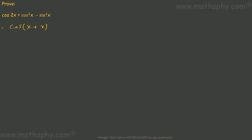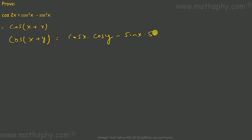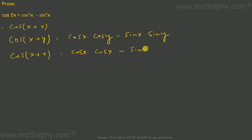We know that cos(x + y) is equal to cos(x)·cos(y) minus sin(x)·sin(y). Here, in place of y we have x, so cos(x + x) would be cos(x)·cos(x) minus sin(x)·sin(x).